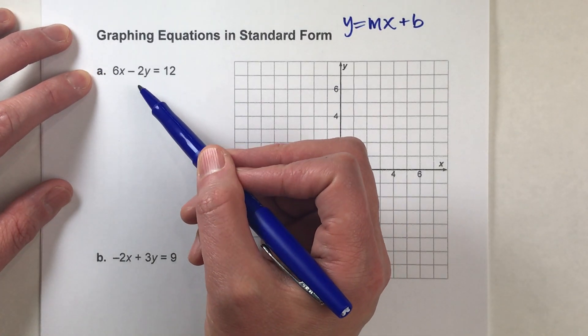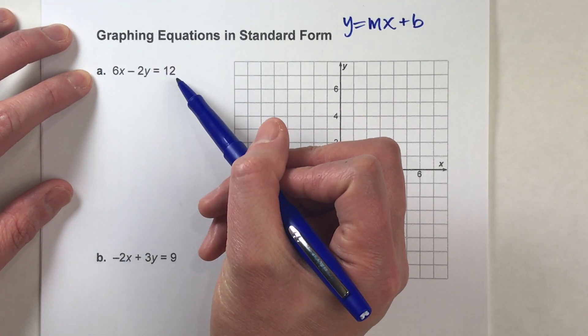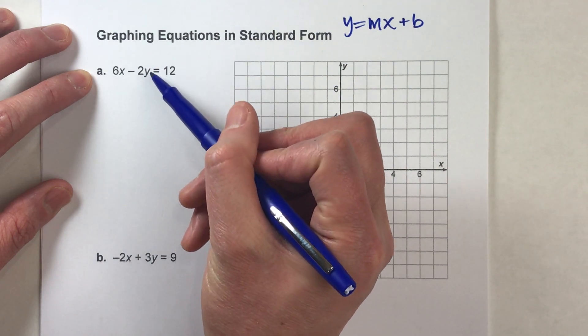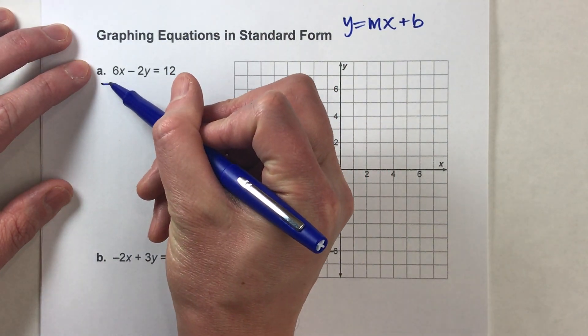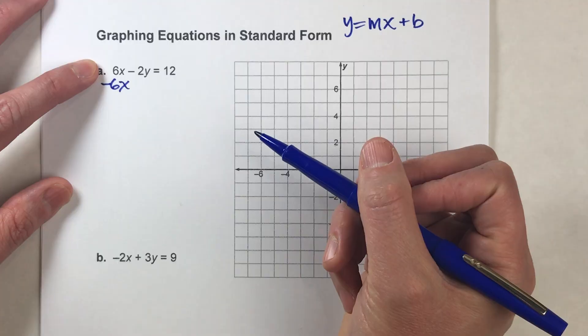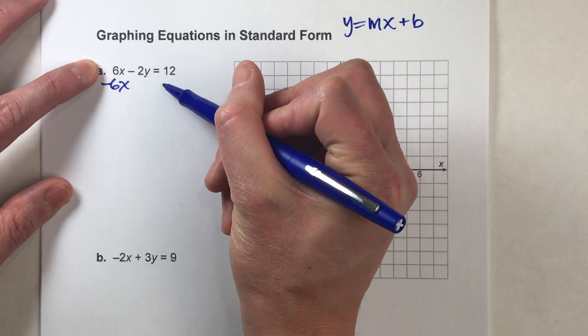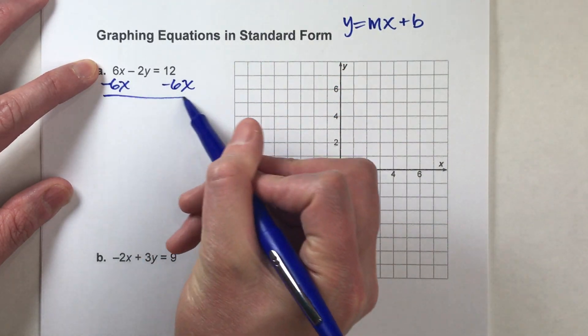Alright, so let's do that to this one: 6x minus 2y equals 12. I want to get the y by itself, so I'm going to start by subtracting 6x from this side. What I do to one side I have to do to the other, so let's do that.